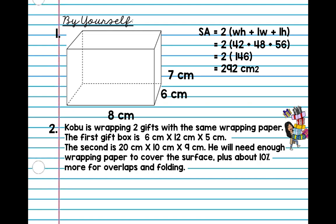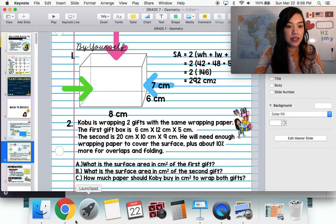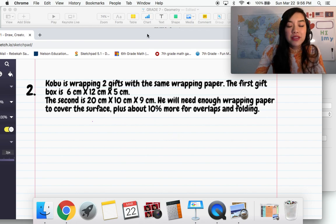Alright, we have one more question — it's a longer one. Kobo is wrapping two gifts with the same wrapping paper. The first gift box is 6 by 12 by 5 centimeters. The second is 20 by 10 by 9 centimeters. He will need enough wrapping paper to cover the surface plus 10% more for overlaps and folding. We need to find: the surface area of gift one, gift two, and the total paper Kobo should buy.